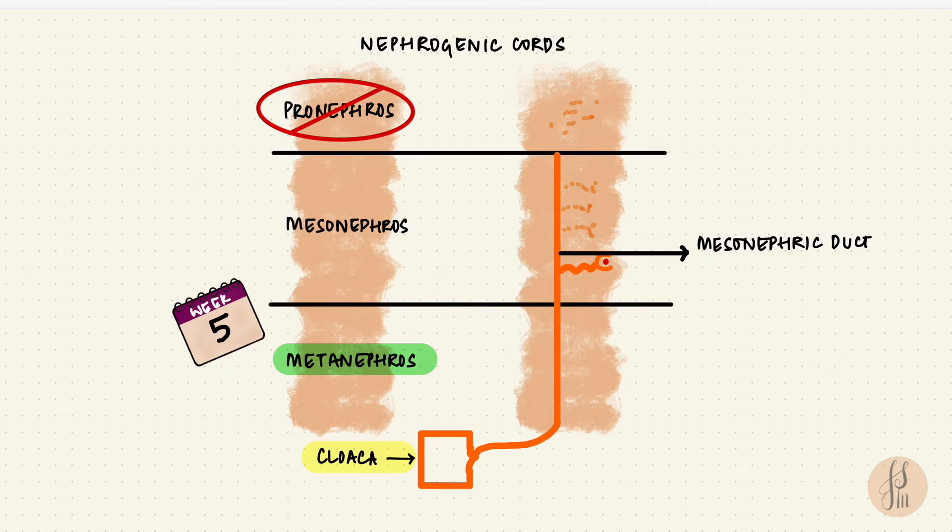From the lower portion of the mesonephric duct, there's a bud that grows. This is the ureteric bud. Now this is going to form the collecting system of the kidney. The lower part of the nephrogenic cord has the metanephric blastema. The ureteric bud induces differentiation of the mesoderm in this region. And that's going to form the excretory portion.